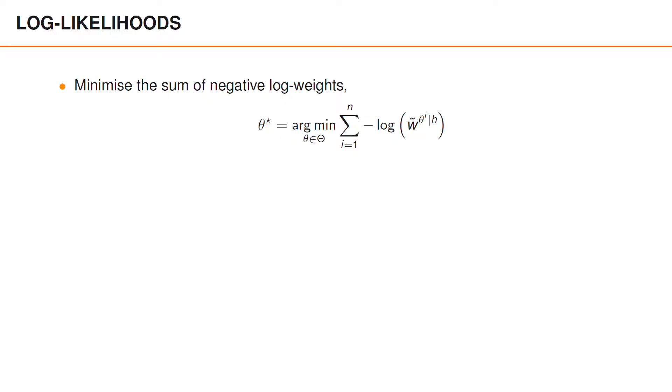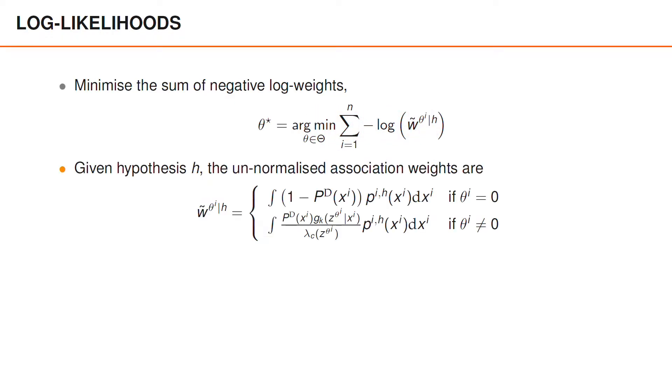As we saw earlier, we wish to minimize the sum of the negative log weights. Given a hypothesis, the unnormalized association weights are given by these two expressions for misdetection association and detection association respectively.